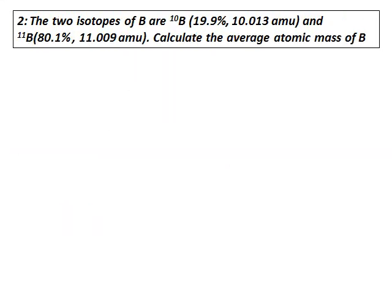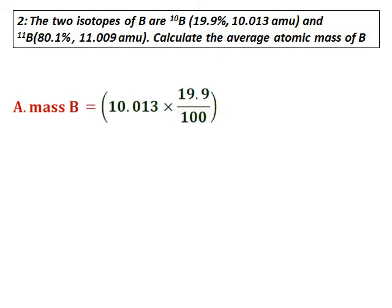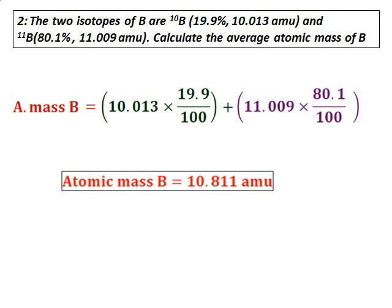The two isotopes of boron are boron-10 and boron-11. The percentage abundance and relative mass are given. Using the same method as before — multiply the percentage abundance by the atomic mass and calculate the average — the atomic mass of boron comes out as 10.811.